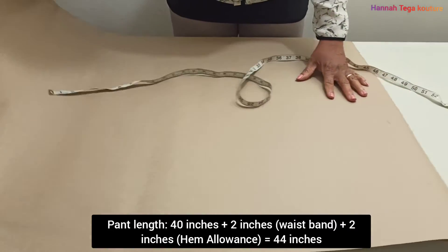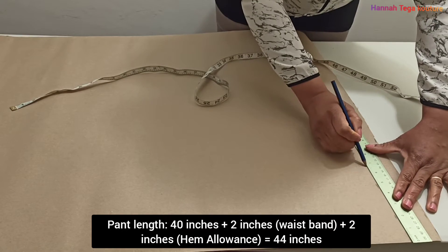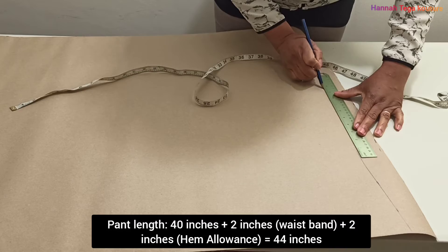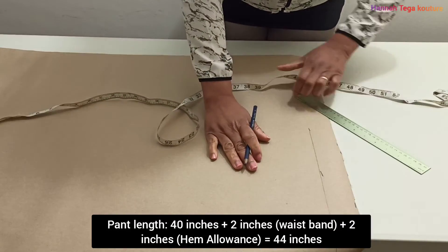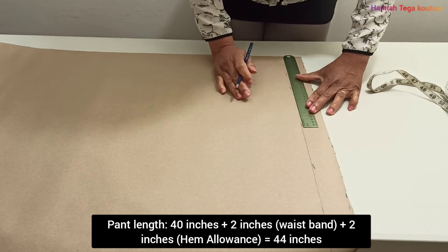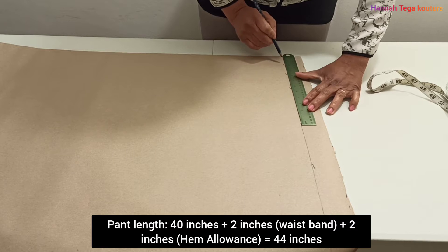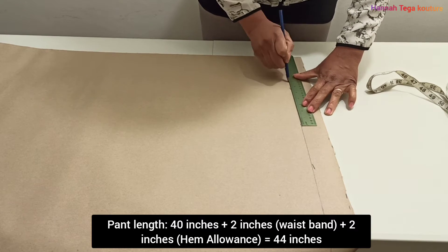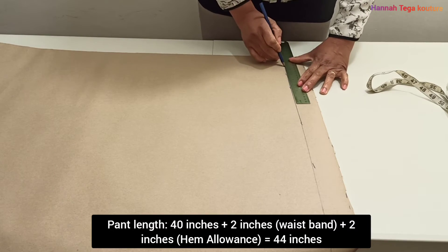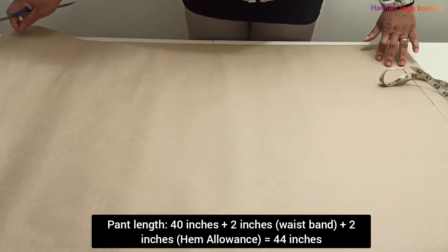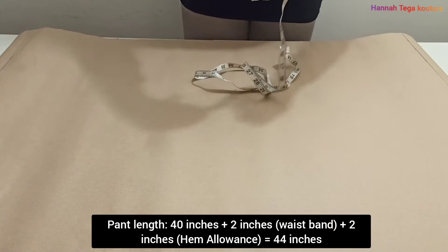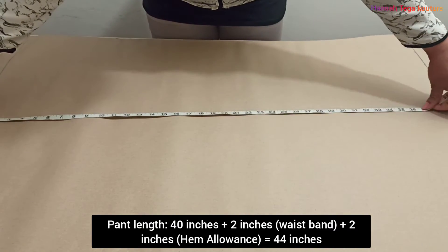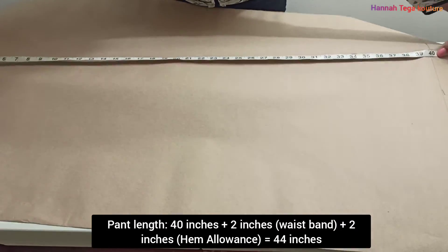Remember I already cut the entire length I needed, the 44 inches on this paper, before starting the pattern itself. The pant length I'm working with is 40 inches. Once you've taken the two inches for the waistband allowance and the two inches for the hem allowance, you'll be left with 40 inches, and that makes the entire length of the pant.